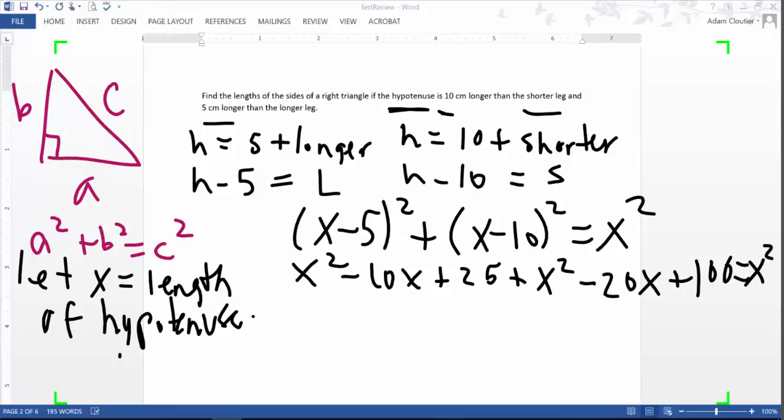Combine some like terms. And what we will get is we'll get 2X squared minus 30X plus 125 equals X squared.